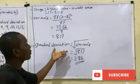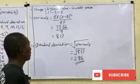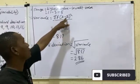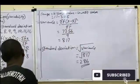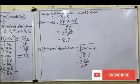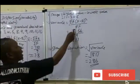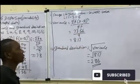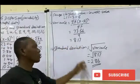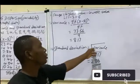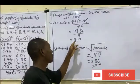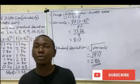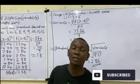For variance, remember you must get the variance first before finding the standard deviation. The formula for variance is the summation of f(x minus x-bar) squared, all over the summation of f. That gives us 73.56 divided by 9, which equals 8.17. To get the standard deviation, take the square root of the variance: the square root of 8.17 gives us the standard deviation. That's a simple way to get standard deviation and variance for ungrouped data.